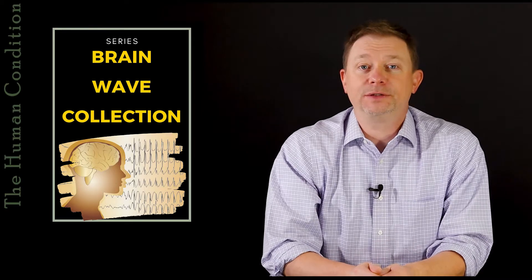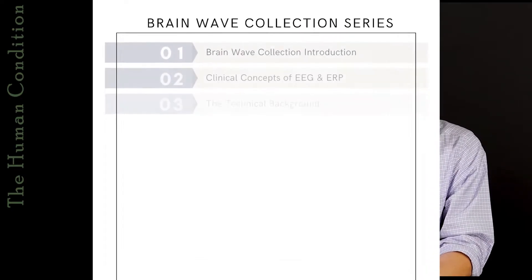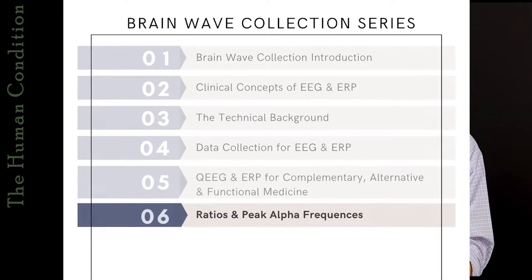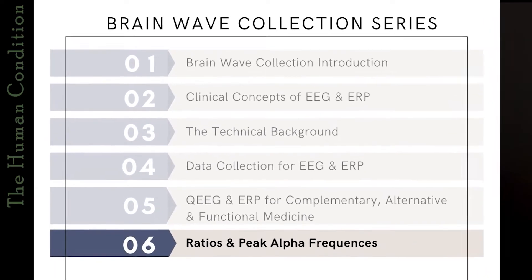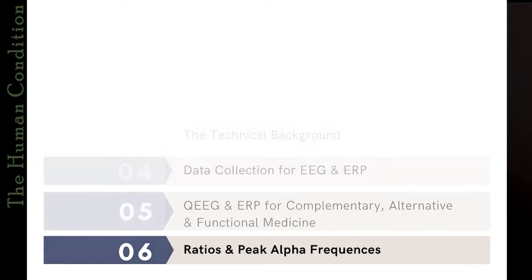Hello and welcome. I'm Michael Pierce and this is The Human Condition. Today we're recording Chapter 6 for the EEG and ERP for Complementary Alternative and Functional Medicine practitioners and their patients and the technicians that perform these procedures. Chapter 6 is about ratios and peak alpha frequencies.